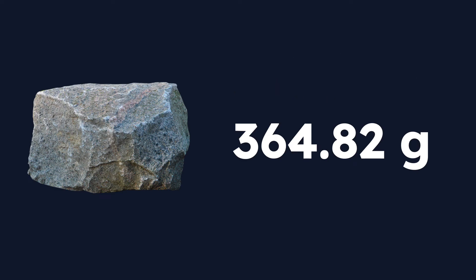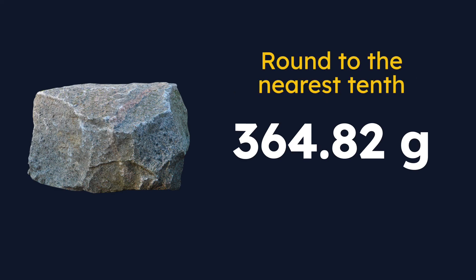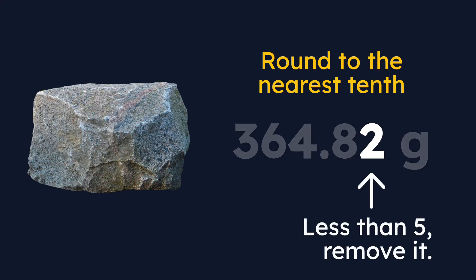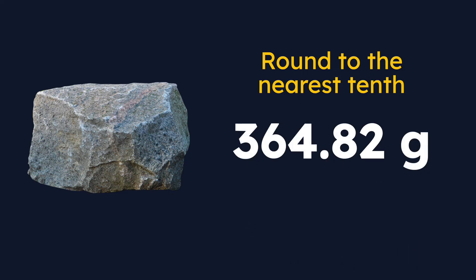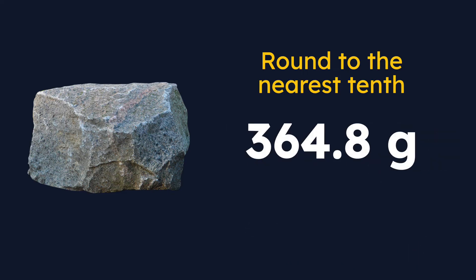What if we want to go further and round to the nearest tenth? That is one place past the decimal point. We have to look at the next digit, and those same rules apply. If that digit is less than five — like it is here — we can just remove it. If it were greater than five, we would round the eight up to a nine. But because it's a two, we can just remove it altogether and we are left with 364.8 grams, rounded to the nearest tenth.